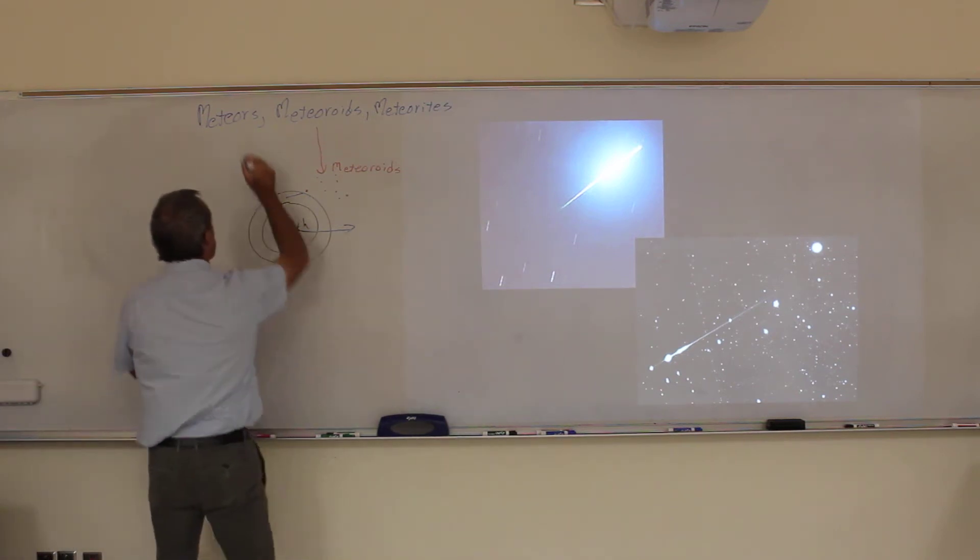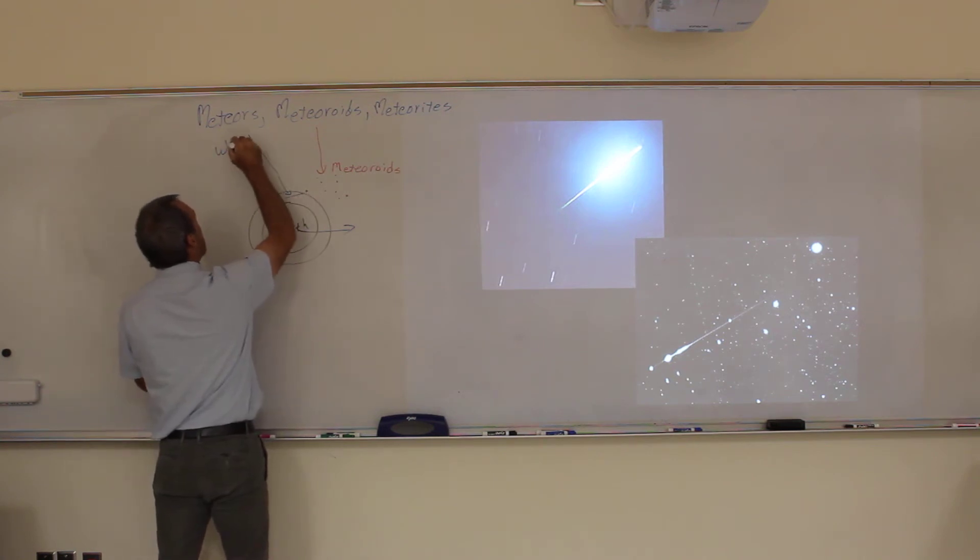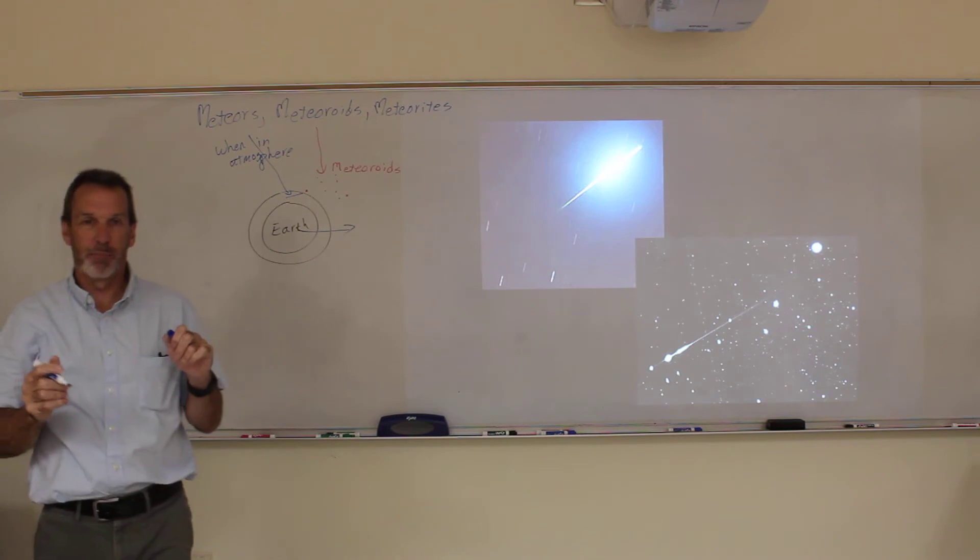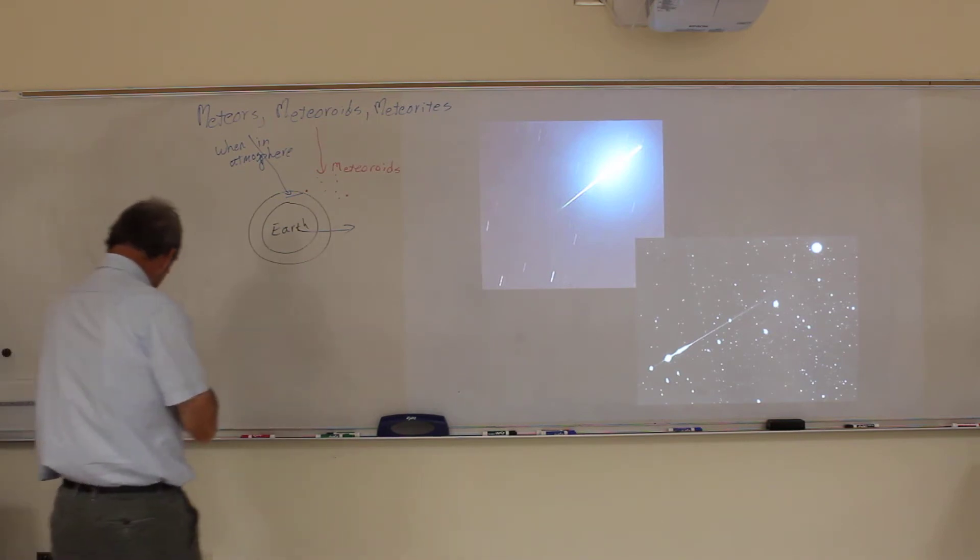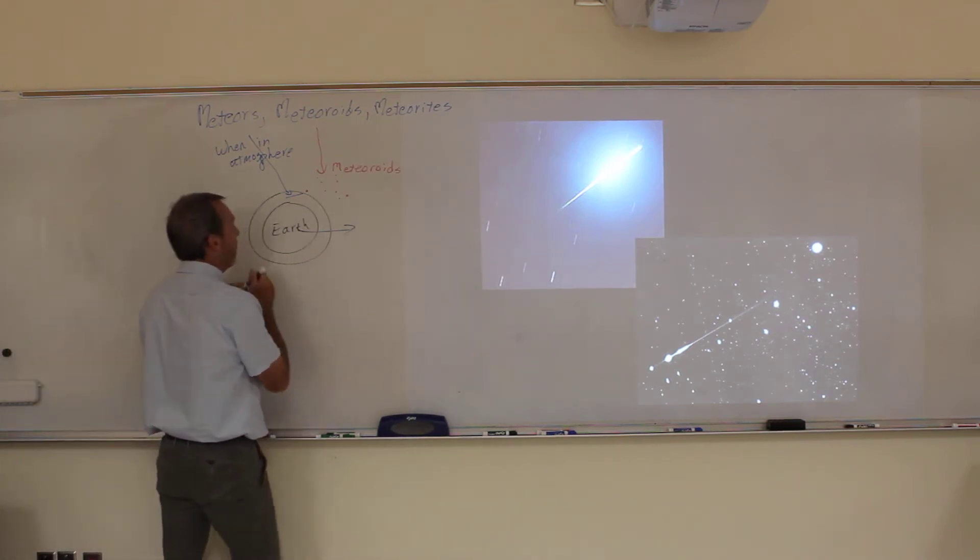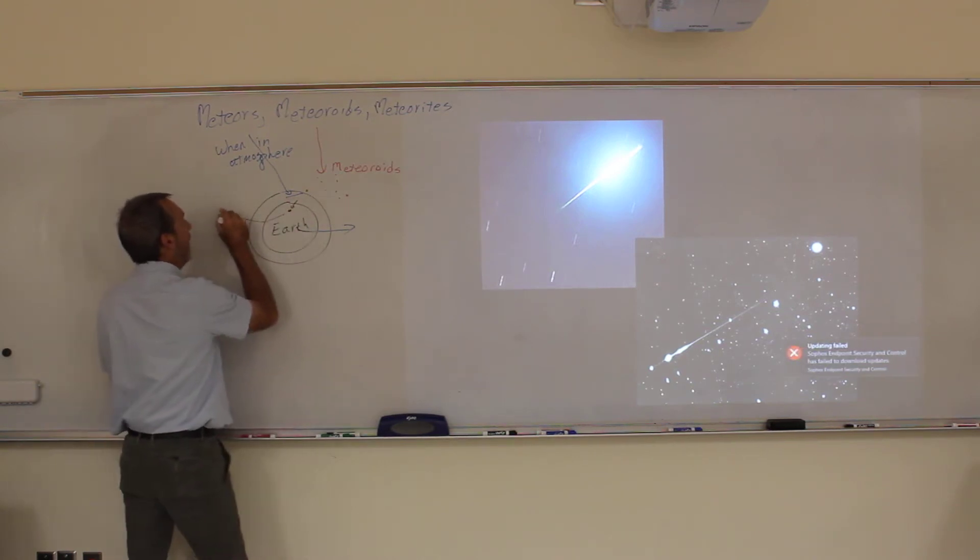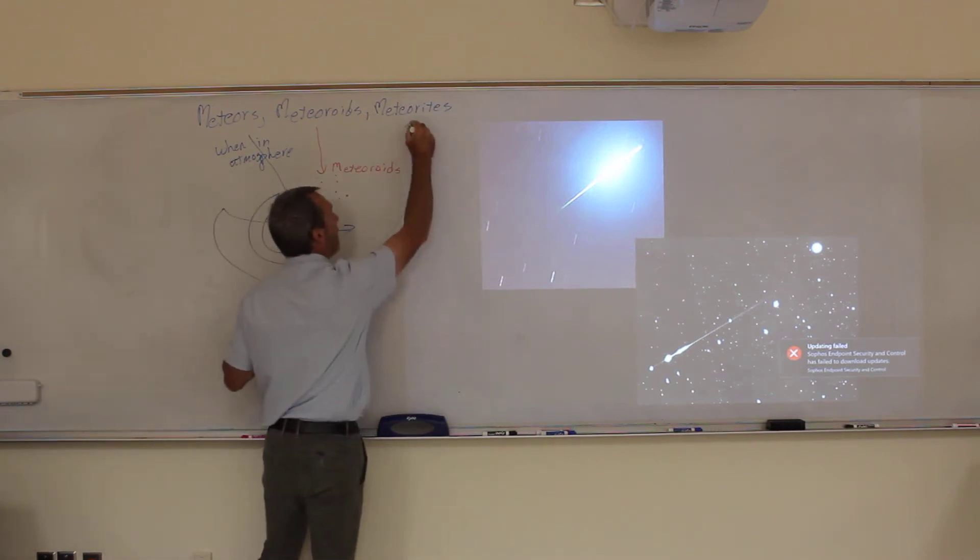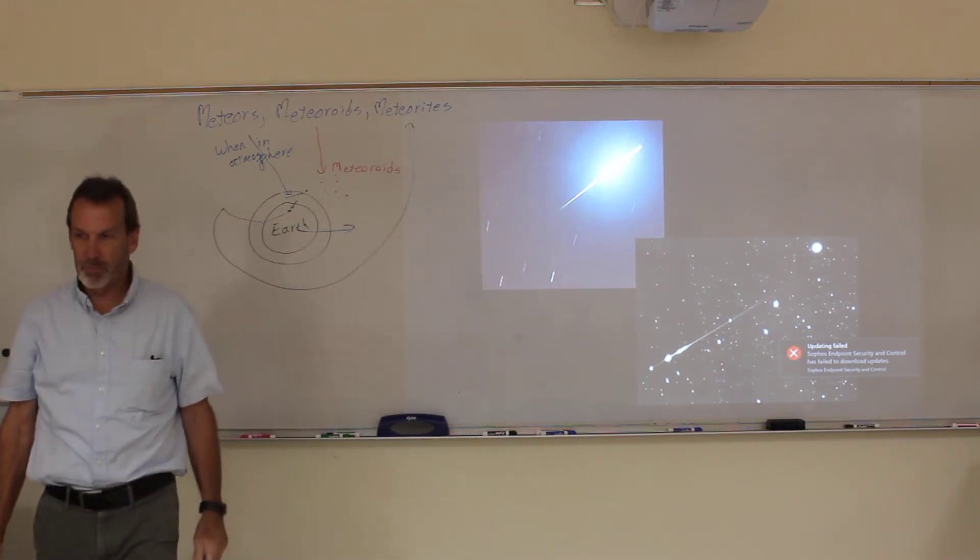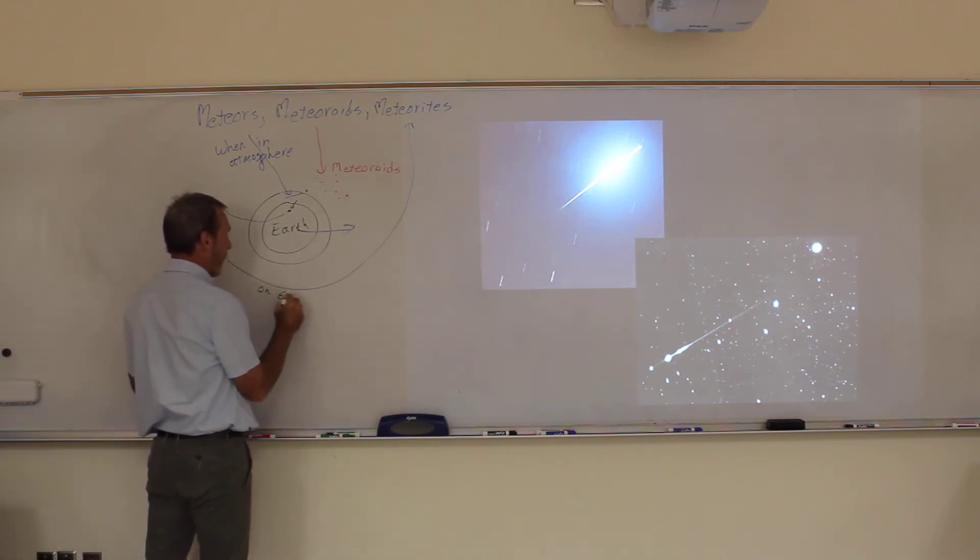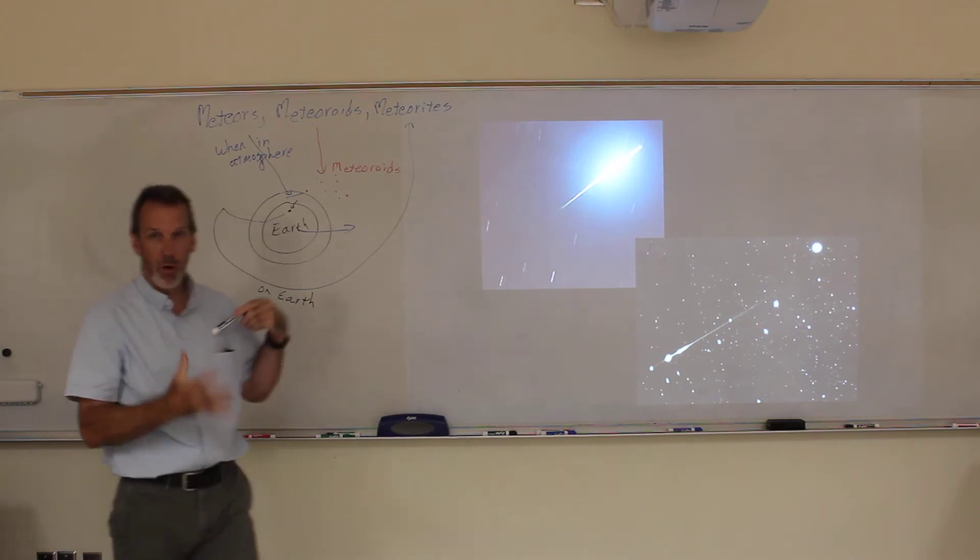And so it's a meteor when in the atmosphere, and that's when you see it as a streak across the sky. Then if it makes it all the way to the Earth, makes it through the atmosphere all the way to the Earth, gets on the ground, it's called a meteorite. So meteorite is whenever it's on the Earth.